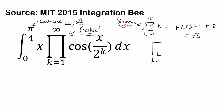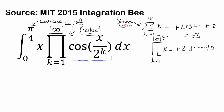So if you have capital Pi from k equals 1 to 10, that's going to be 1 times 2 times 3 times all the way to 10. We have this crazy product, and what's even crazier is that we're going all the way to infinity — not stopping at some finite value. And what's inside isn't any easier: you have cosine of x over 2 to the k-th power.